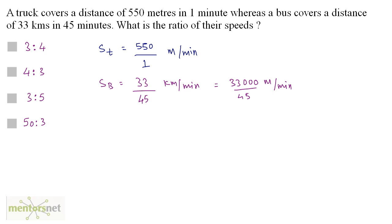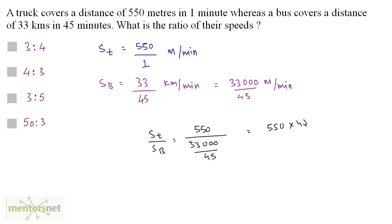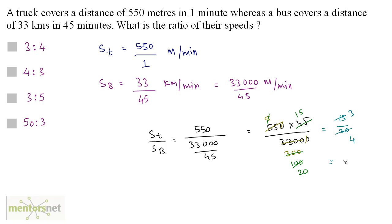Now the units are the same. The ratio of the speed of the truck to the speed of the bus is 550 divided by 33,000 divided by 45, which equals 550 times 45 divided by 33,000. Cancelling the zeros, 11 fives are 55 and 11 times 300 is 3300. Then 3 times 15 is 45, 3 times 100 is 300, and 5 times 20 is 100, leaving 15 by 20, which is 3 by 4. So the ratio of the speed of the truck to the speed of the bus is 3 to 4. Option A.